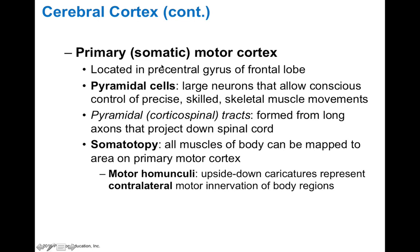The primary motor cortex is the very posterior part of the frontal lobe, forming the precentral gyrus. It contains pyramidal cells — large motor neurons that allow for conscious control of precise, skilled skeletal muscle movements. The axons of these pyramidal cells project down the corticospinal tracts, forming long axons that travel down the spinal cord and synapse with secondary motor neurons there. What's interesting is these cells form what we call somatotopy — soma means body, topy means map — so all muscles of your body can be mapped to a specific area on the primary motor cortex, forming the motor homunculus, an upside-down caricature representing contralateral innervation of different body regions.